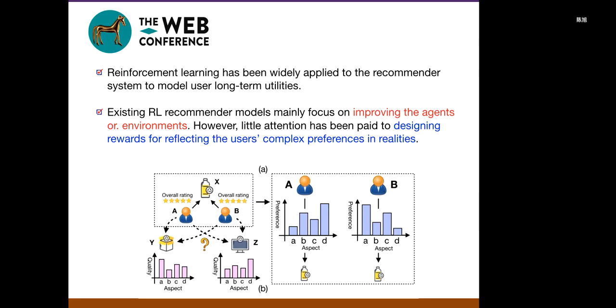To alleviate this problem, recent years have witnessed the emerging trend of formulating recommender systems as a reinforcement learning problem. While there are many RL-based recommender models, existing methods mostly focus on improving the agent or the environment.